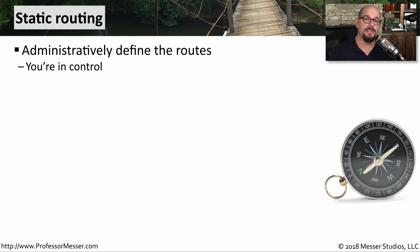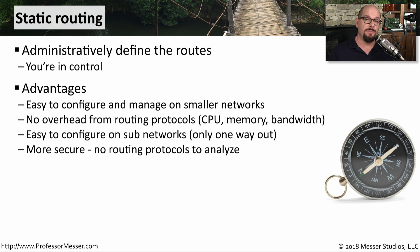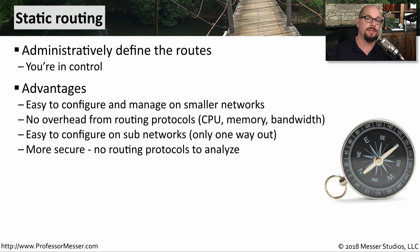One way to define this list of available routes in the routing table is for the network administrator to manually add them. We call this static routing, and the administrator of this router is the one that determines what routing decisions are made and where traffic flows. If you have a relatively small or simple network, it may be easier to have everything statically routed. You don't have to worry about running any dynamic routing protocols, and there's no additional overhead of routing protocols taking up CPU and bandwidth. This is commonly done at remote sites where there's only one way to send data, so you would add a single static route onto that router.